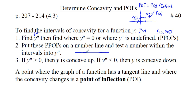If we have two PPOIs at numbers a and b, we put y double prime on top and y below, then analyze the signs between intervals: to the left of a, between a and b, and to the right of b. If y double prime is greater than zero, then y is concave up. If y double prime is less than zero, then y is concave down. A point of inflection is where the graph has a tangent line and the concavity changes signs — from either positive to negative or negative to positive.